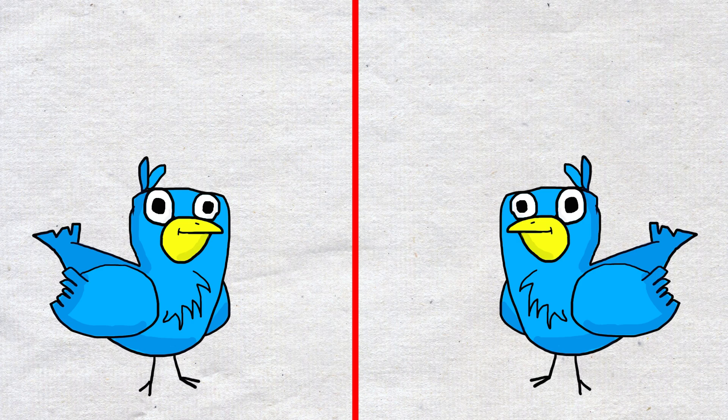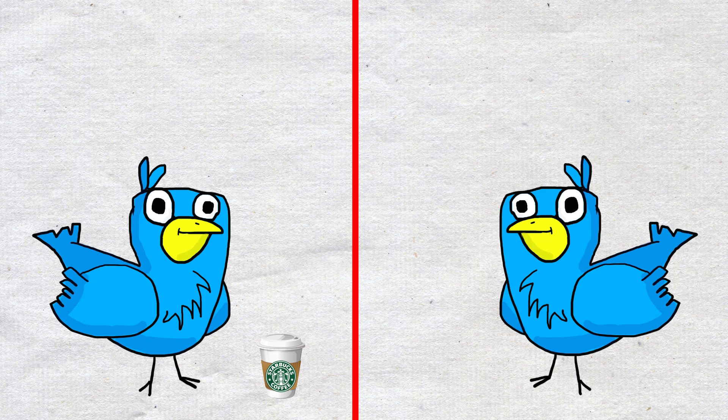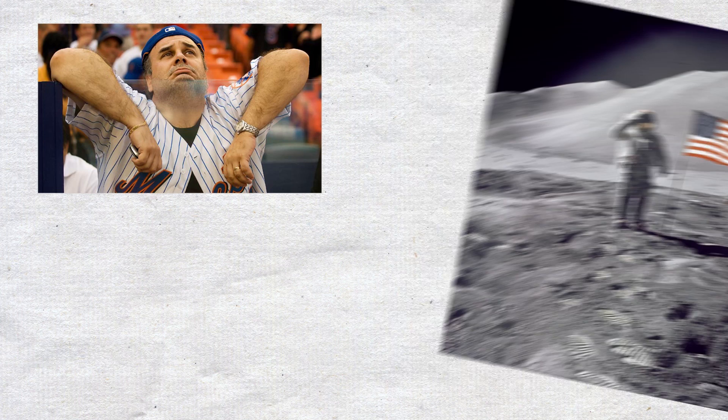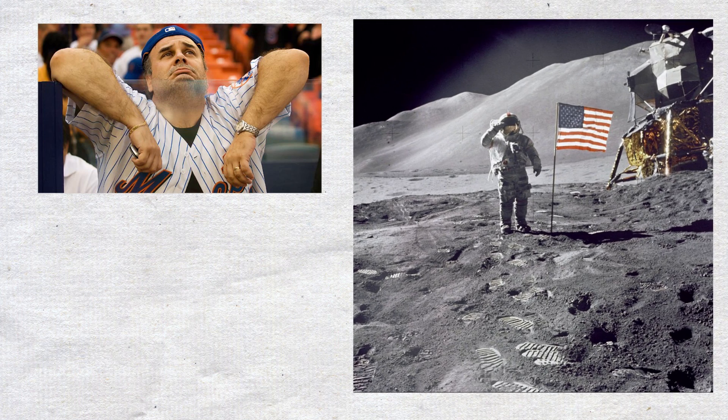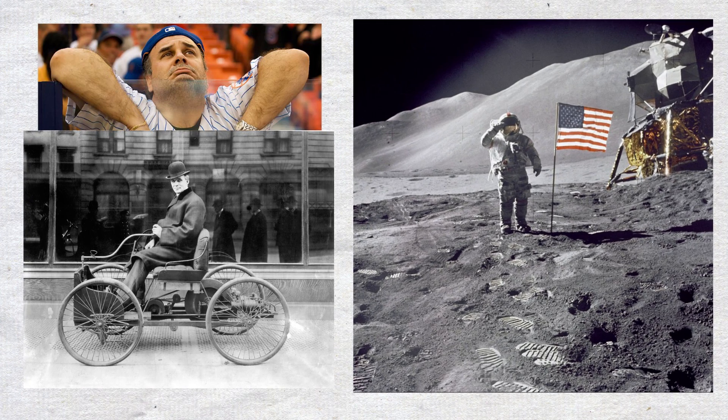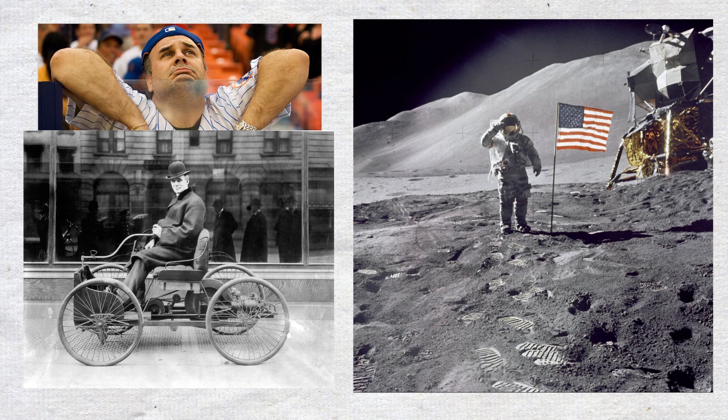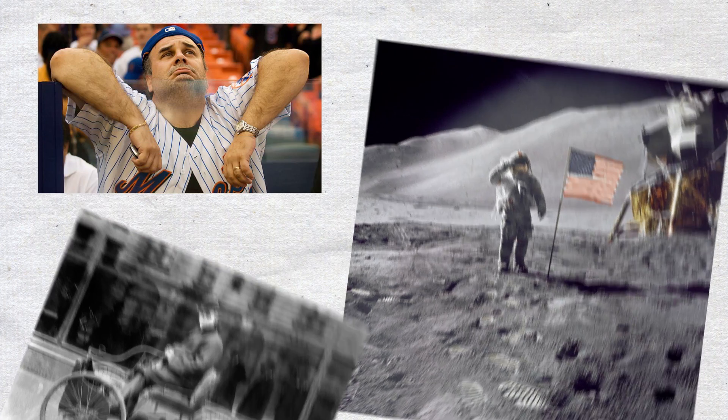So there would be a separate universe for stopping at Starbucks on your way to work, and another one for stopping at Dunkin' Donuts, each occurring simultaneously in their own unique timeline. If we extrapolate this to existence in general, there's an alternate timeline in which your favorite sports team didn't lose that big game, one where the Russians beat the United States to the moon, one where Henry Ford decided to collect stamps instead of pursue his idea of a motorized carriage. Basically, anything that could happen does happen, and things that couldn't happen also happen. But we're getting ahead of ourselves.